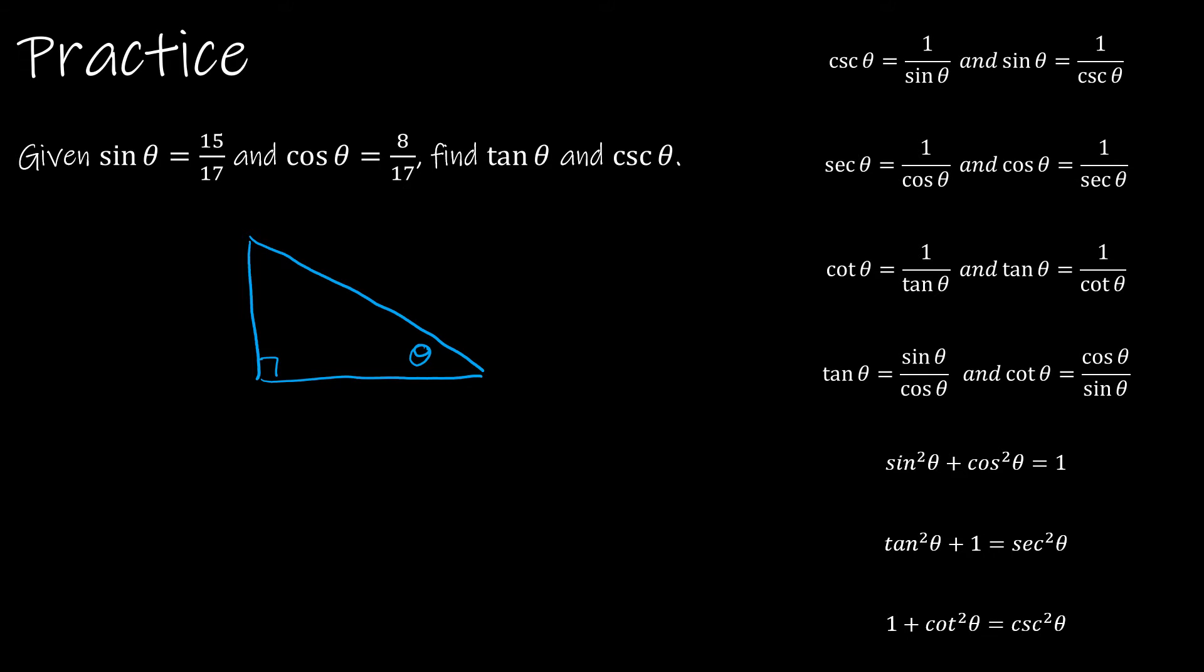if sine of theta, sine being opposite over hypotenuse, if sine of theta is 15 over 17, and cosine of theta, which is adjacent over hypotenuse, is 8 over 17, then this is what my right triangle looks like.